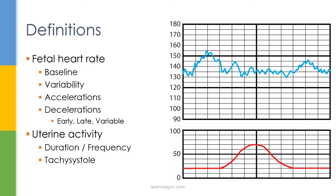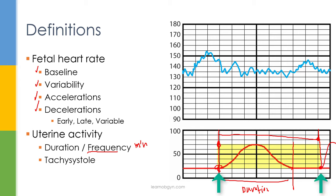There is a standard four-component method for describing a tracing: baseline, variability, accelerations, and decelerations — always in that order. When describing contractions, we mention frequency (measured in minutes). Duration is measured from the start to the end of one contraction. Frequency is measured from the start of one contraction to the start of the next. Having more than five contractions per 10 minutes is called tachysystole.